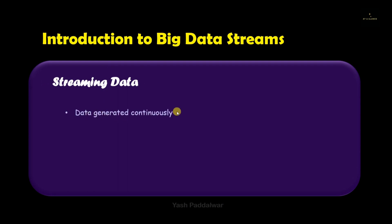Streaming data is data which is generated continuously. Up till now in the previous videos, the different processing and storage techniques we discussed were for static data. No doubt it was big data, but it was not generated continuously. Now we are going to see big data streams, where data is received continuously from different sources, and naturally the format in which the data is received will be different.